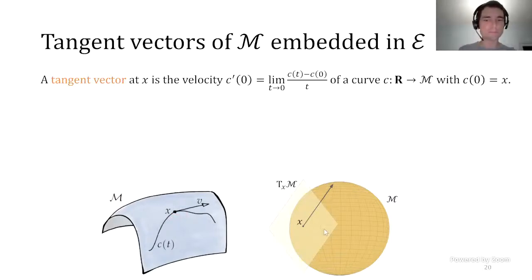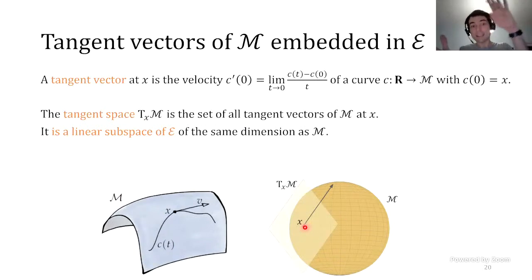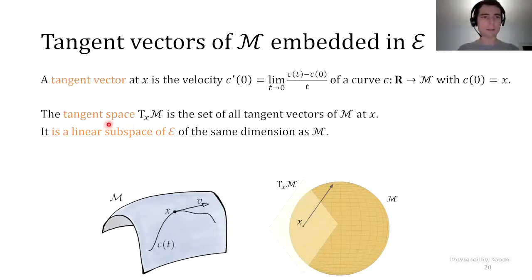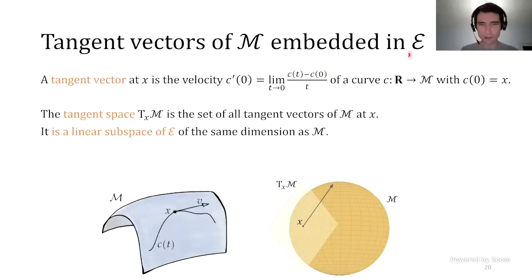The tangent space is just the set of all tangent vectors. For the sphere, the tangent space at X is the linear subspace of dimension two that is orthogonal to point X with respect to the usual inner product in R^n. The big thing about smooth manifolds is that the tangent spaces defined this way are linear subspaces of E, and they all have the same dimension—that's what we call the dimension of M. But if you pick some non-smooth set like the cross from earlier and think about what the tangent space is according to this definition, you'll get a set that is not a linear space.